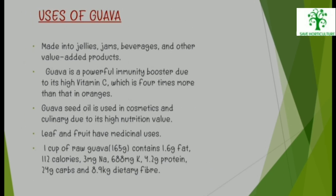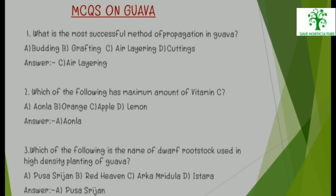Uses of Guava: Guava is made into jellies, jams, beverages, and other value-added products. Guava is a powerful immunity booster due to its high Vitamin C content, which is 4 times more than that in oranges. Guava seed oil is used in cosmetics and culinary applications. Leaves and fruit have medicinal uses. One cup of raw Guava contains 1.6 g fat, 112 calories, 3 mg sodium, 688 mg potassium, 4.2 g protein, 24 g carbohydrates, and 8.9 g dietary fiber.